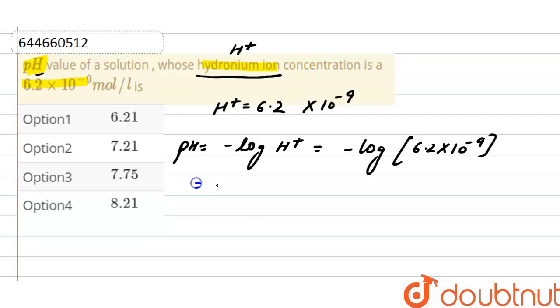Solving this, it will be minus of log 6.2 minus log of 10^-9. So from here it will be minus log 6.2 plus 9 log of 10.